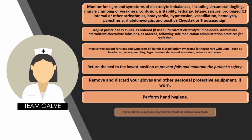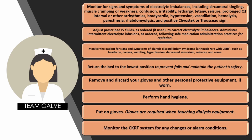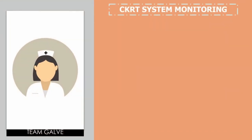Remove and discard gloves and other PPE. Perform hand hygiene. Put on new gloves — gloves are required when touching dialysis equipment. Monitor the CKRT system for any changes or alarm conditions. The machine will alarm when the urine bag or effluent bag is full and needs to be drained, then replaced and the system continued. This brings us to another sub-section: CKRT system monitoring.